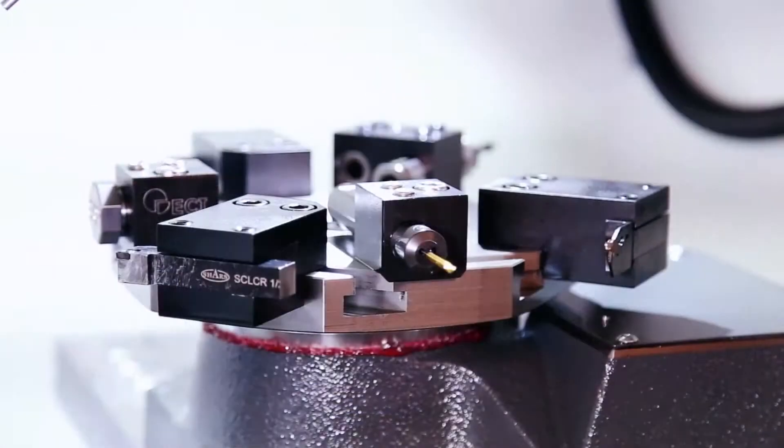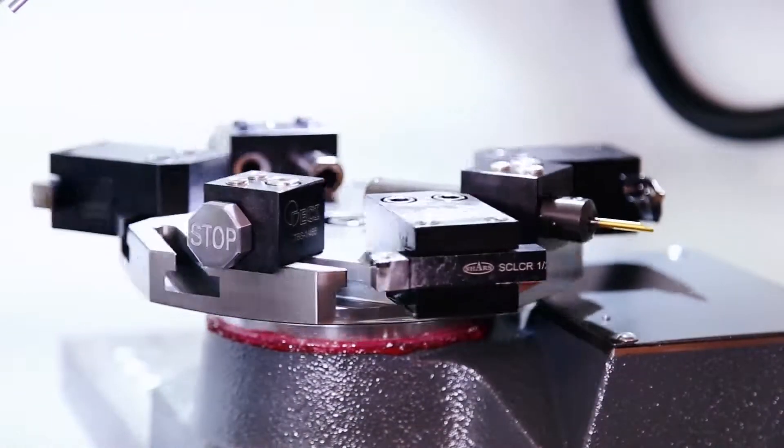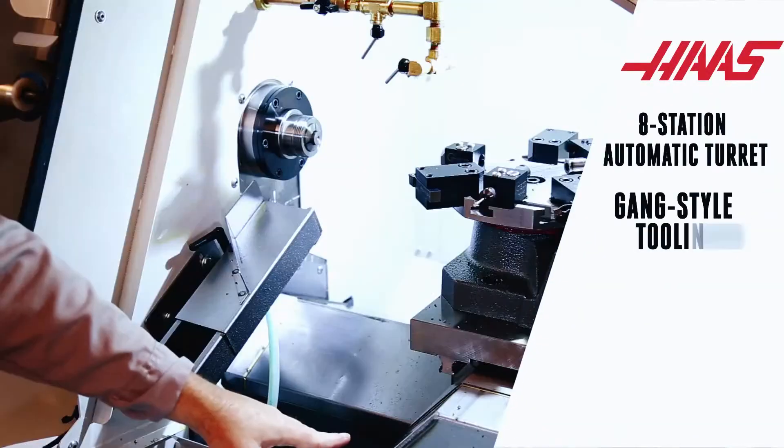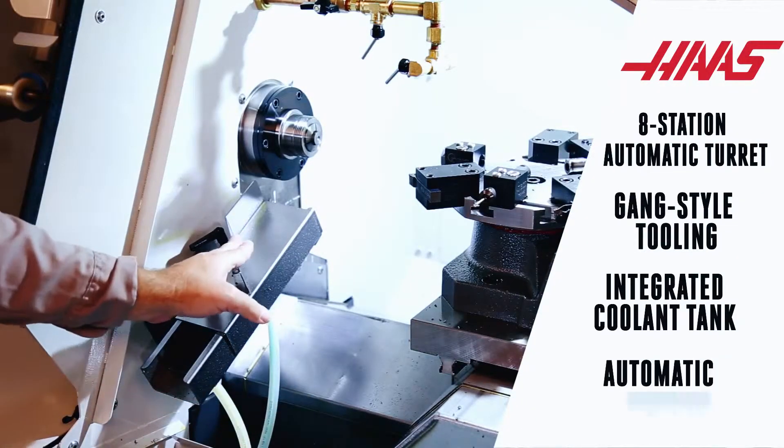This small footprint lathe has an eight station automatic turret with gang style tooling, an integrated coolant tank, and an optional automatic parts catcher.